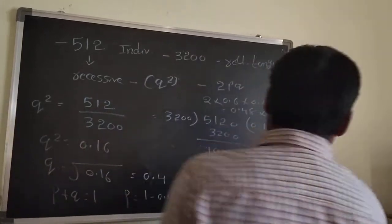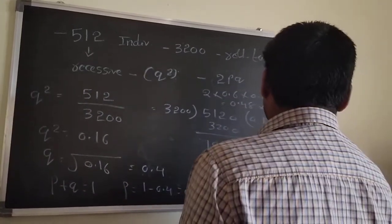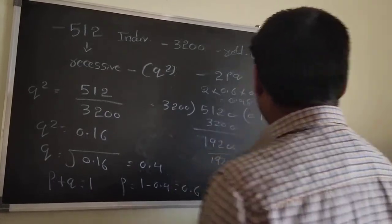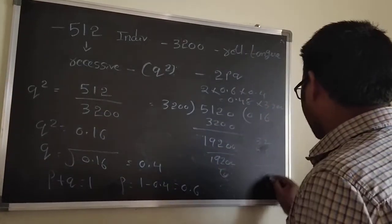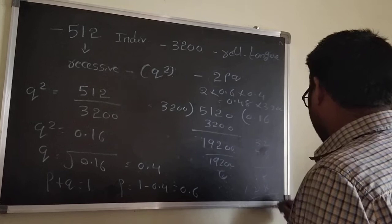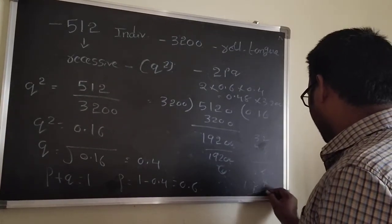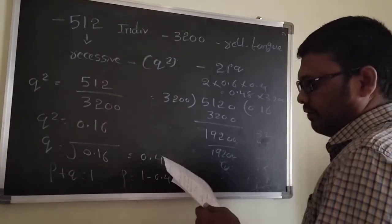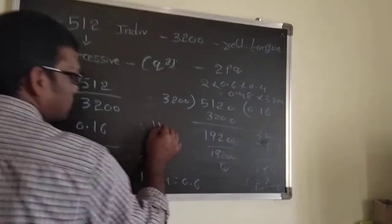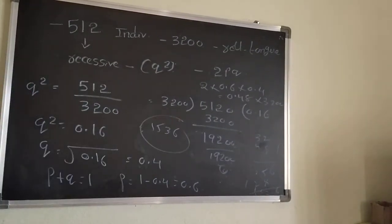So 0.48 × 3200 = 1536. The answer — the number of heterozygous individuals — is 1536.